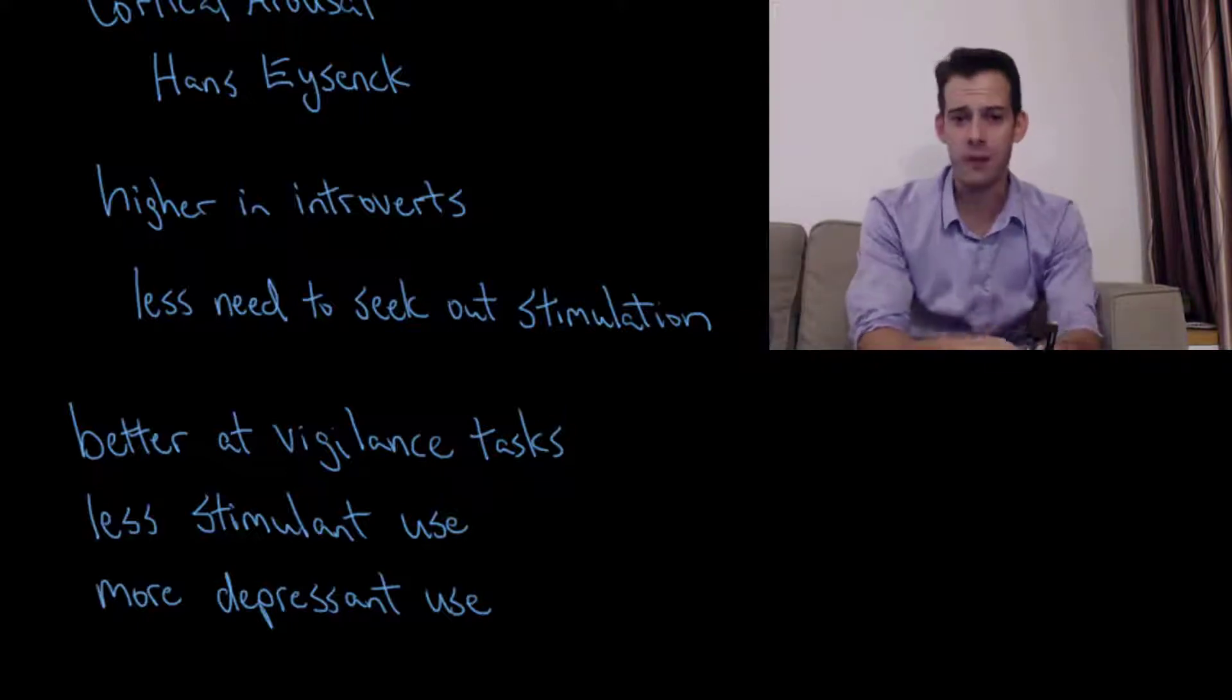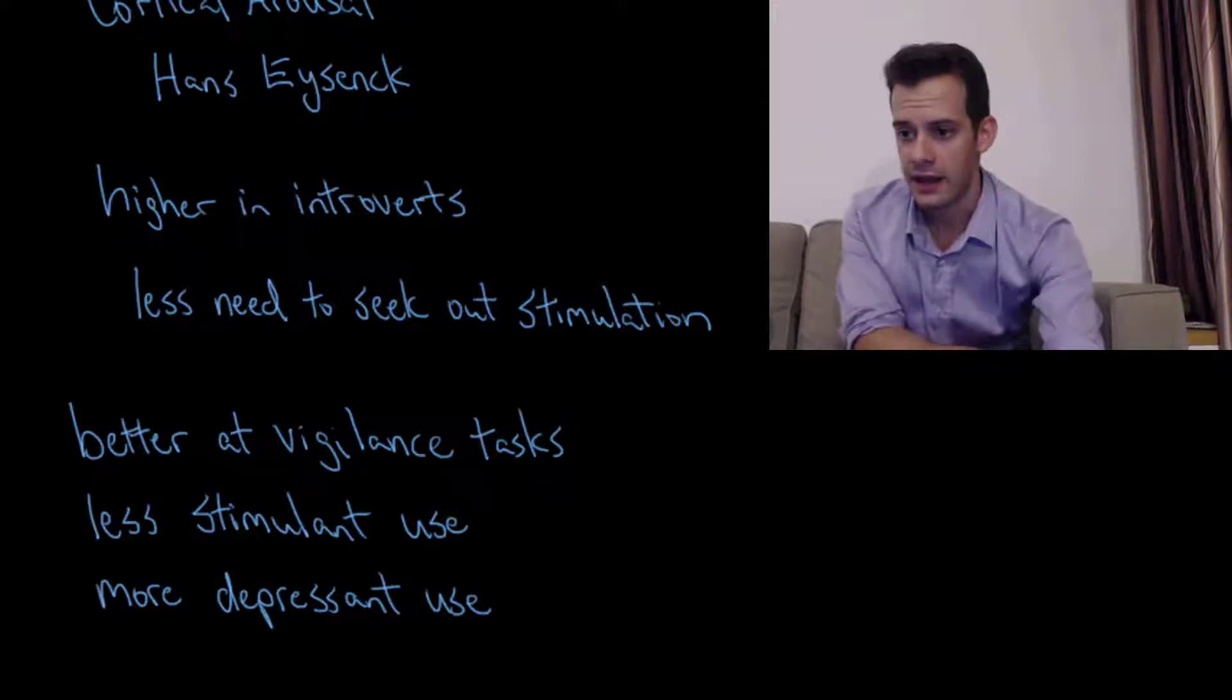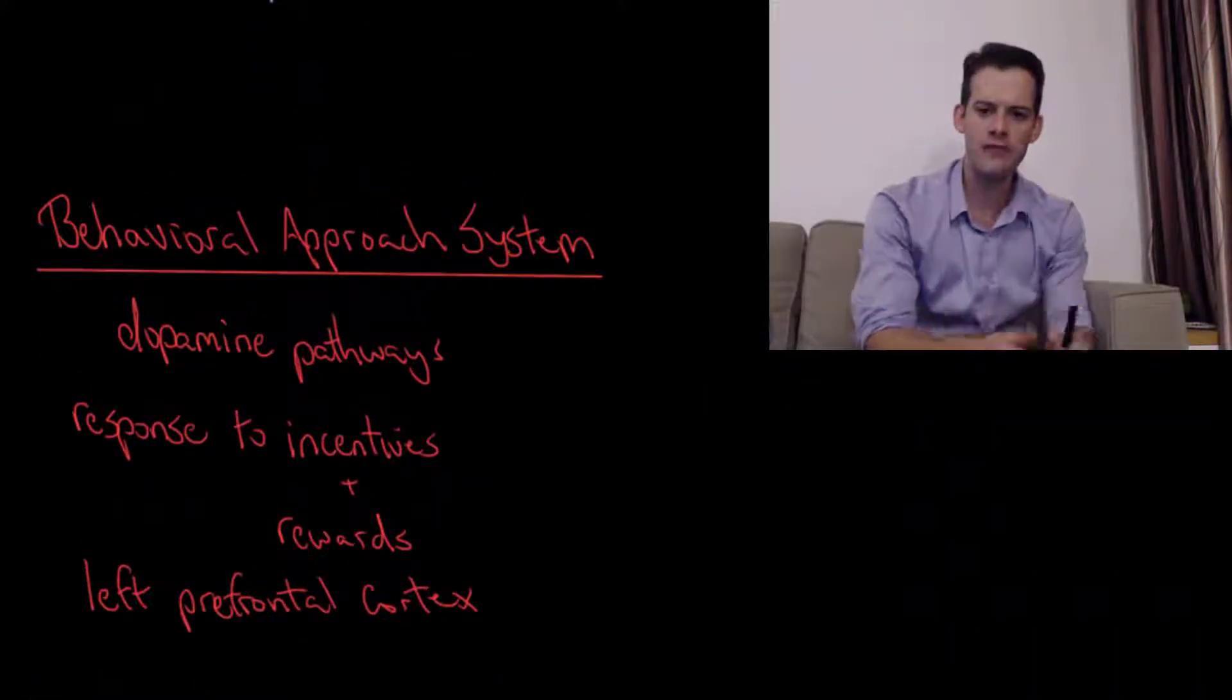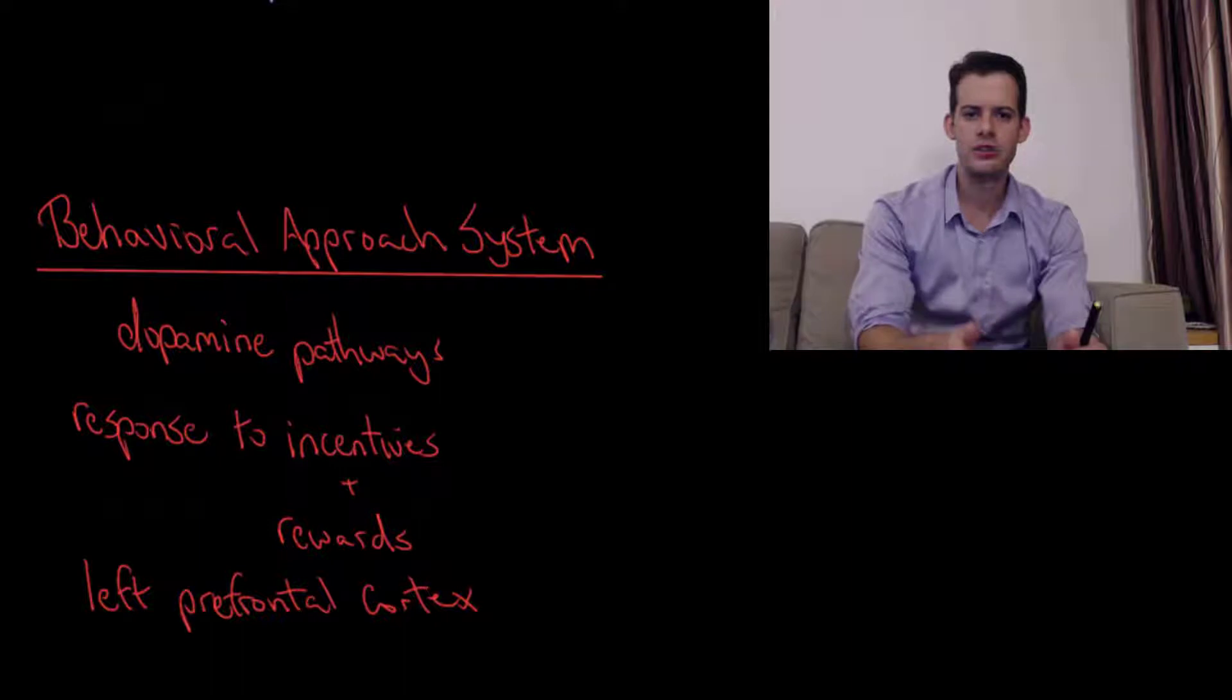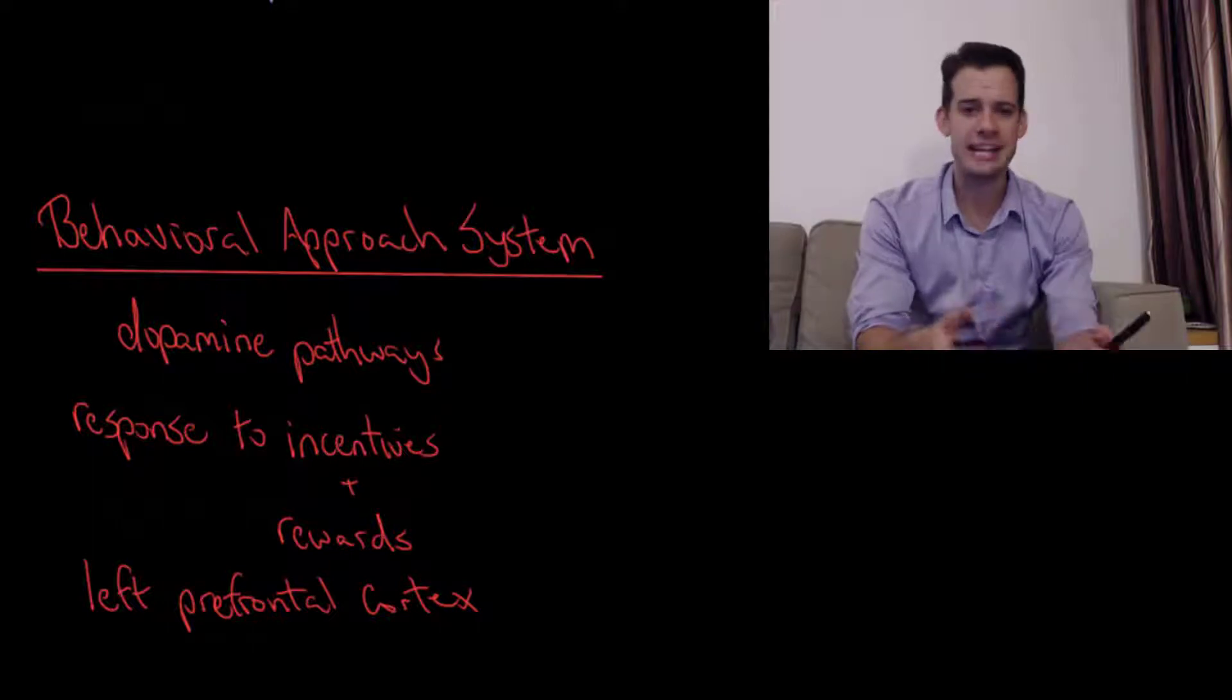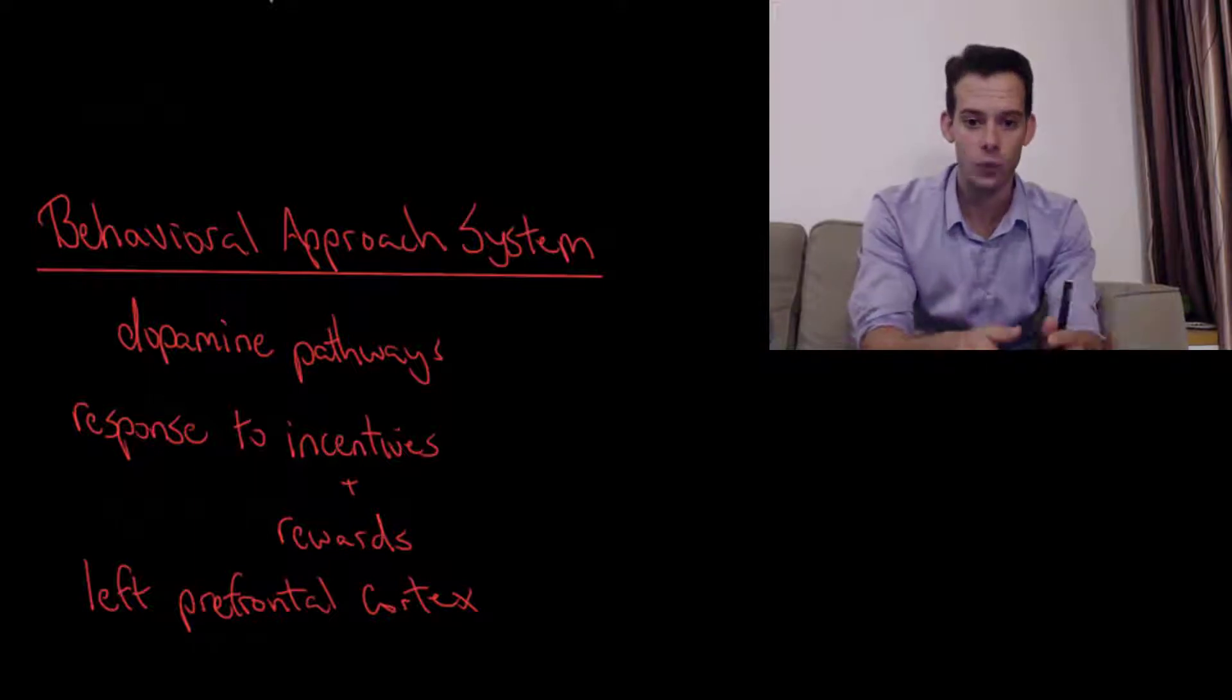Now another way that we can think about biological differences between people is to look at two systems and the first of these is the behavioral approach system. So this refers to a system that uses pathways that use the neurotransmitter dopamine and it's really about the response to incentives and rewards. This is forcing you to approach situations. It's sort of pushing you out into the world and it's associated with higher levels of activity in the left prefrontal cortex.